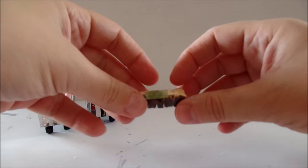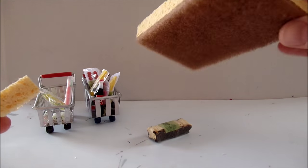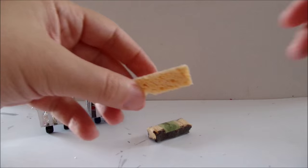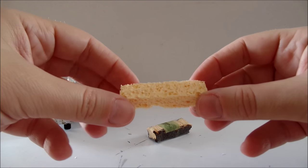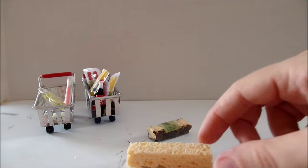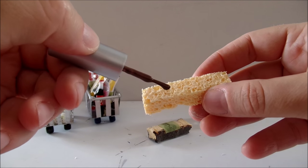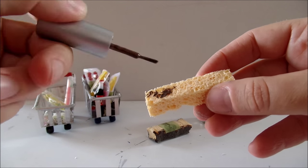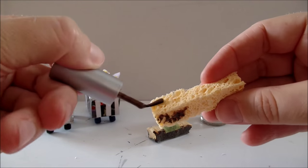To make bread, take this sponge, remove the top and cut out this rectangle. Using brown nail polish, paint three sides. One, two, three.